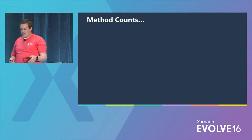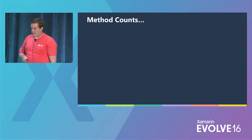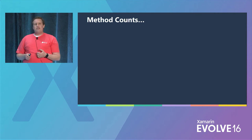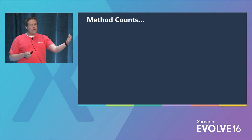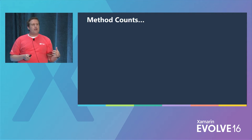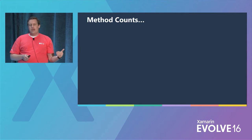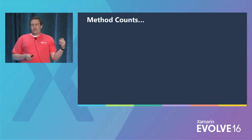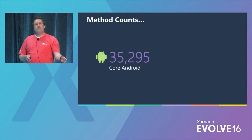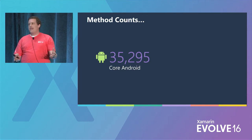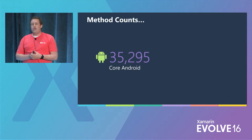I did an interesting experiment. I took account of the number of methods that exist in the core Android library — the Android.jar file. There's quite a few in there. There's over 35,000 methods, according to the DEX count, in the core of Android. This is API level 23.